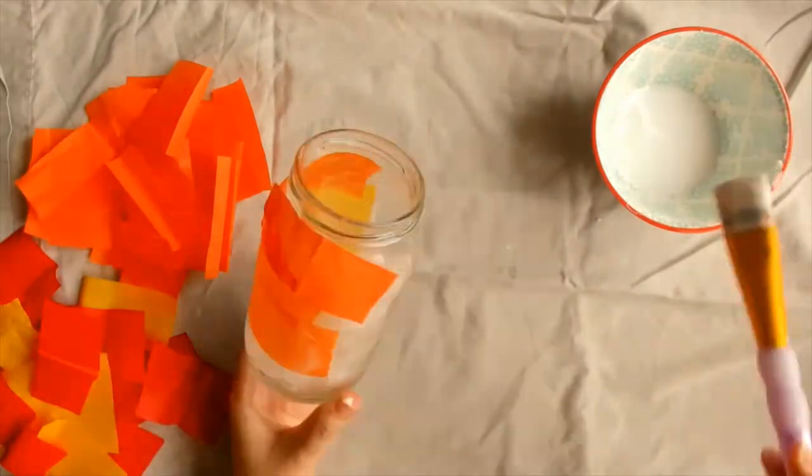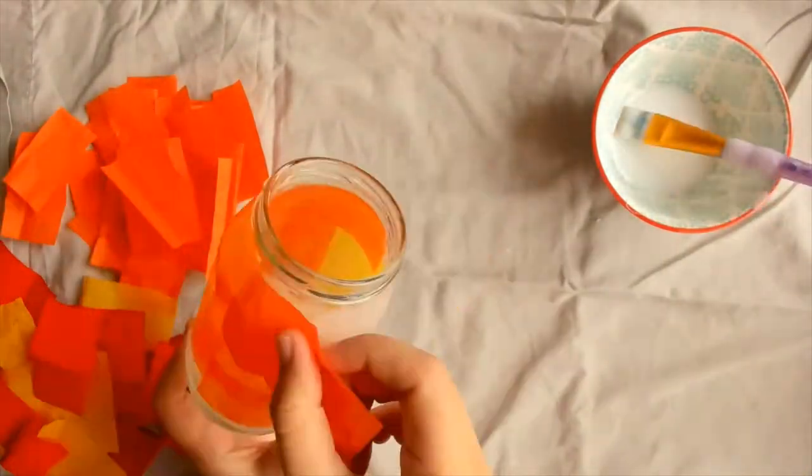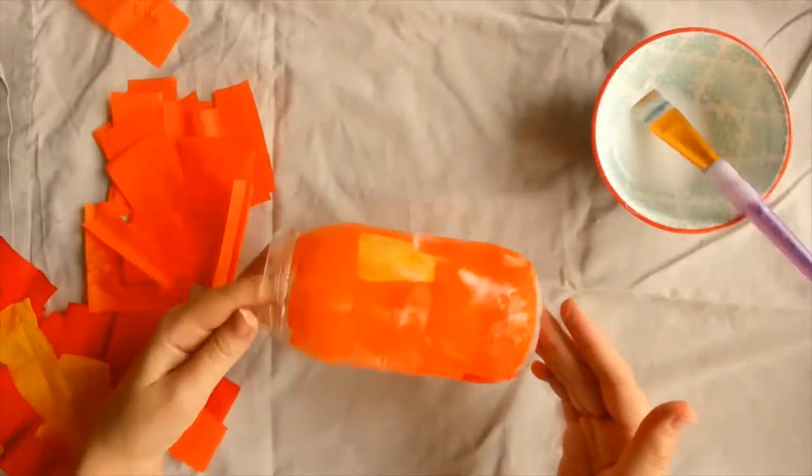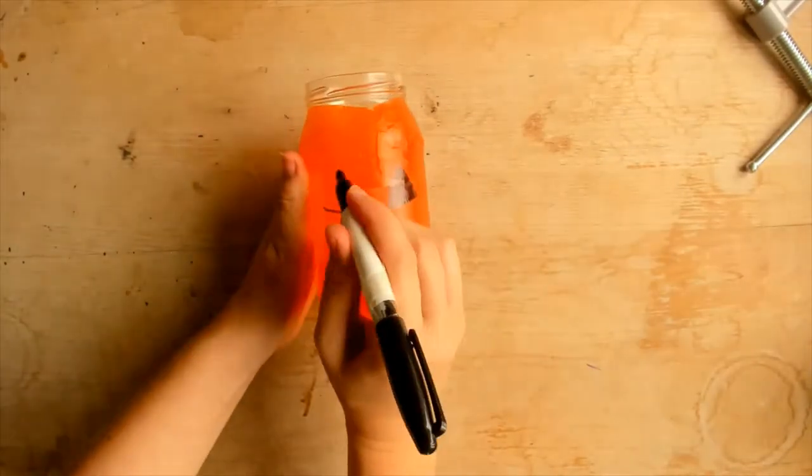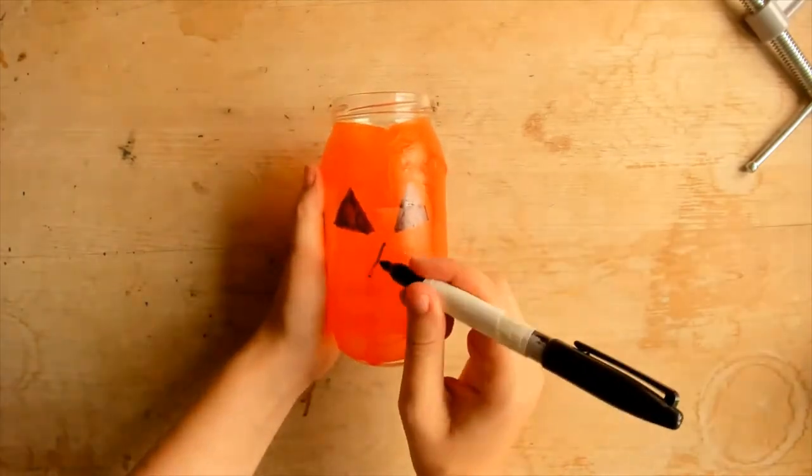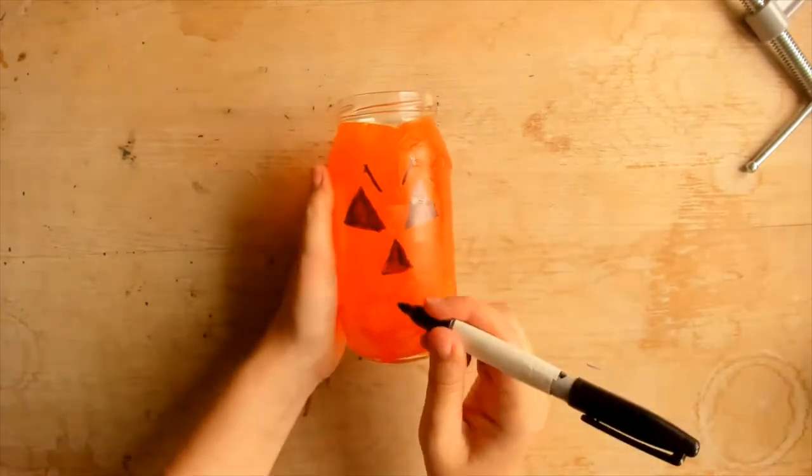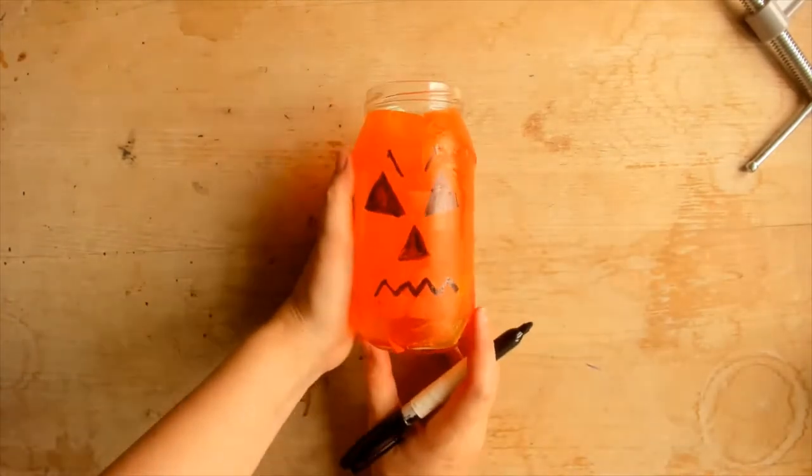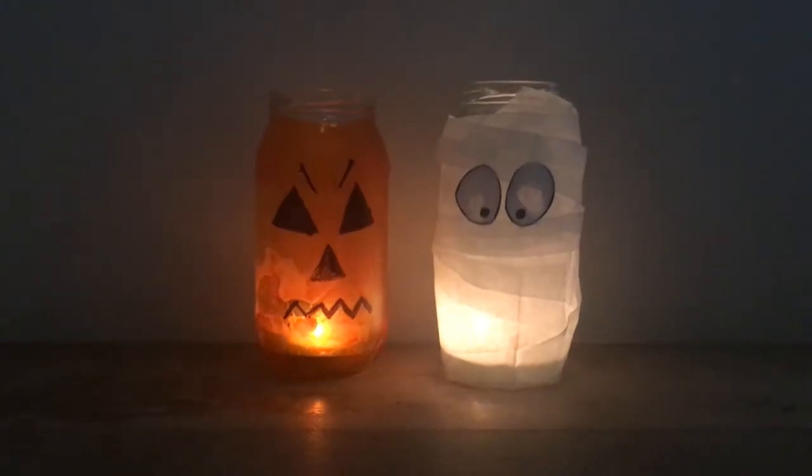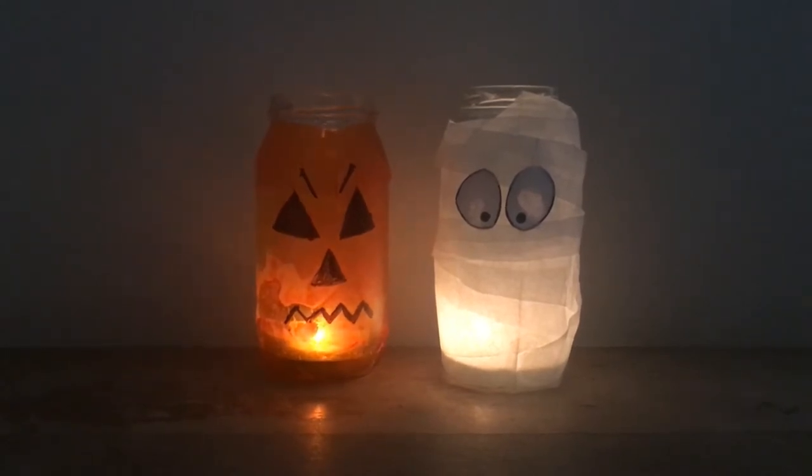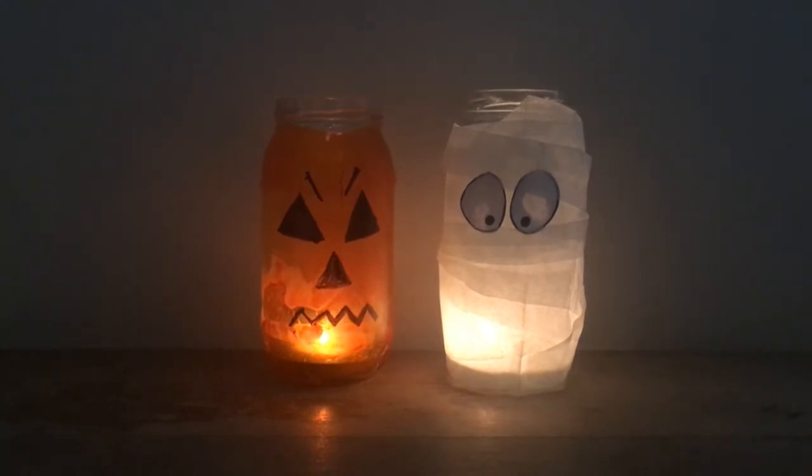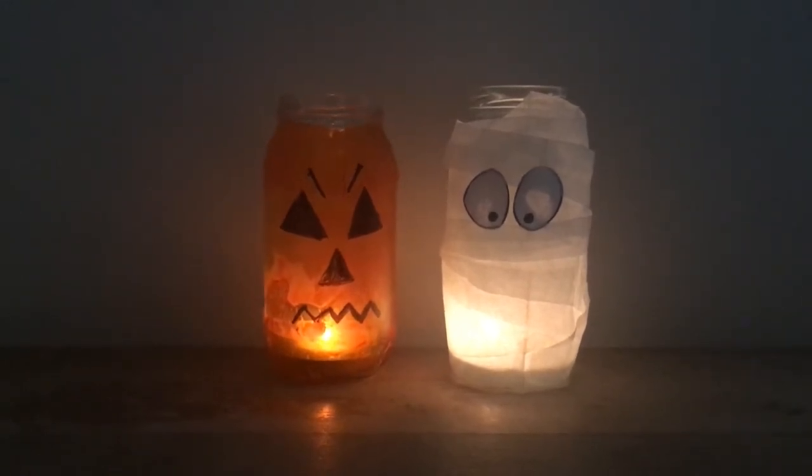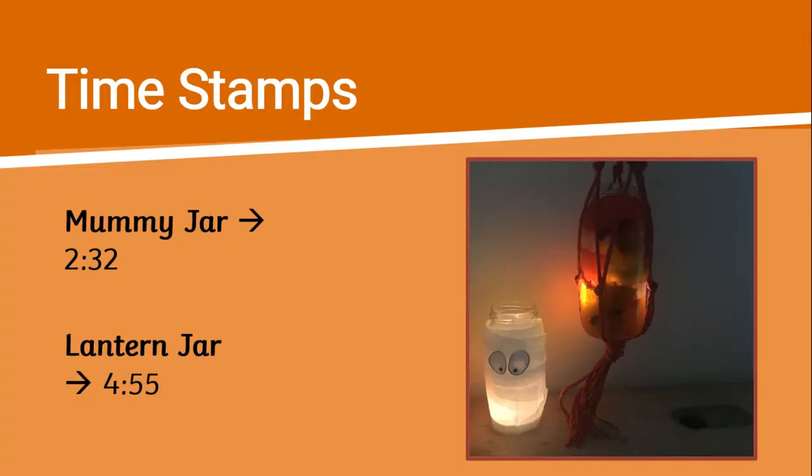Once the tissue paper is dry, take your permanent marker and draw on the facial features of your Halloween pumpkin. You might want to sketch out different designs first so you choose the best one for your pumpkin lantern. And there you have it, a DIY Halloween pumpkin jar. Ask an adult to put a tea light inside and your lantern will glow just like a spooky pumpkin lantern. Choose where you would like to go next in the video.